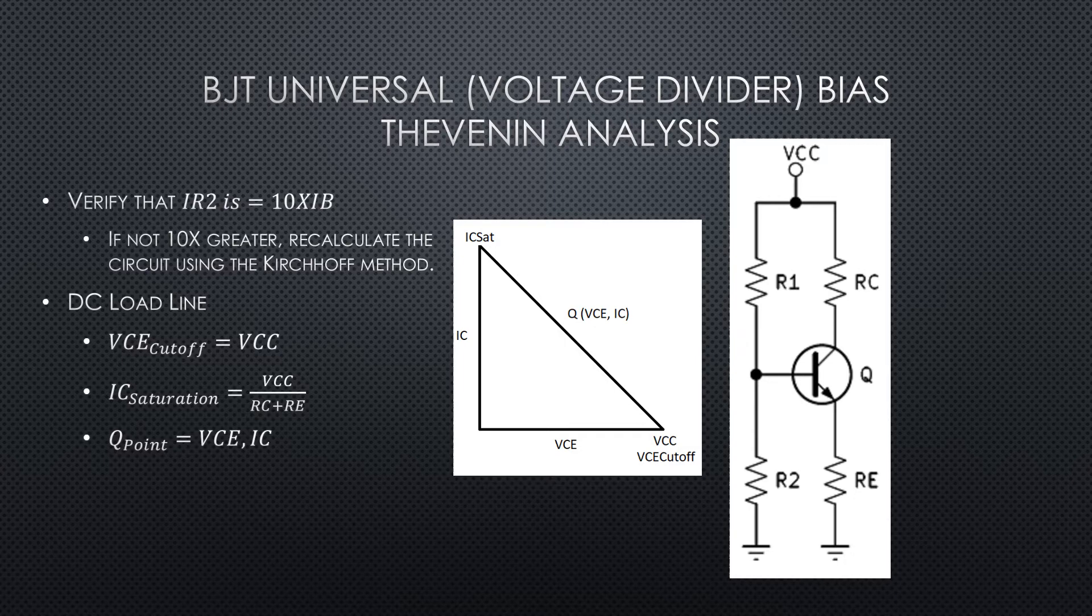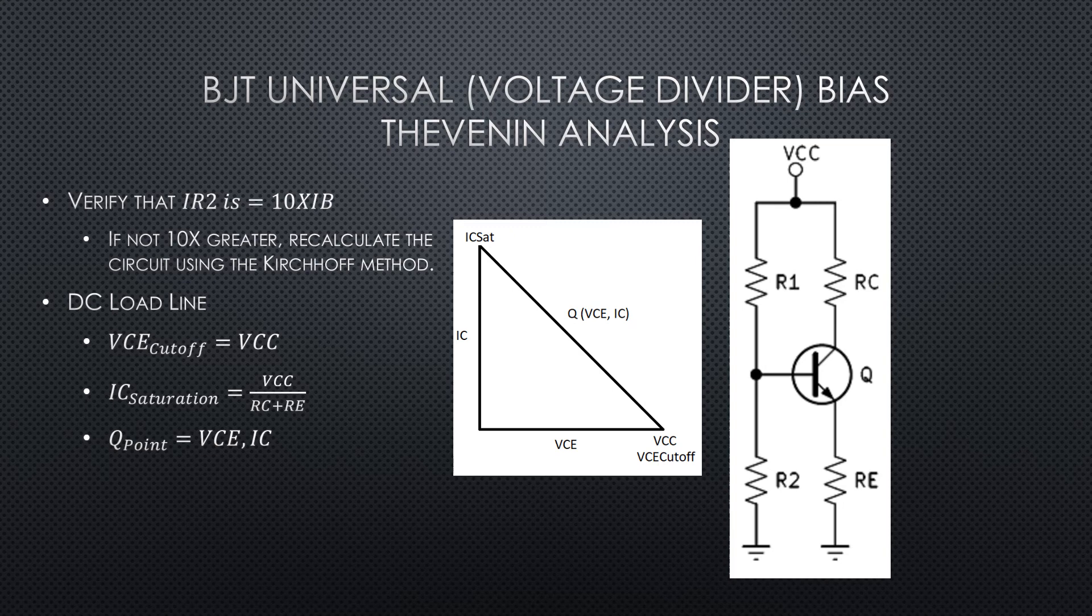Now once we've established that our IB is good, it's 10 times smaller than IR2, we can go ahead and calculate all of our other voltages, get our VCE, get our saturation current, get our cutoff voltage, and go ahead and develop the DC load line. Make sure that our Q point is somewhere in the middle.